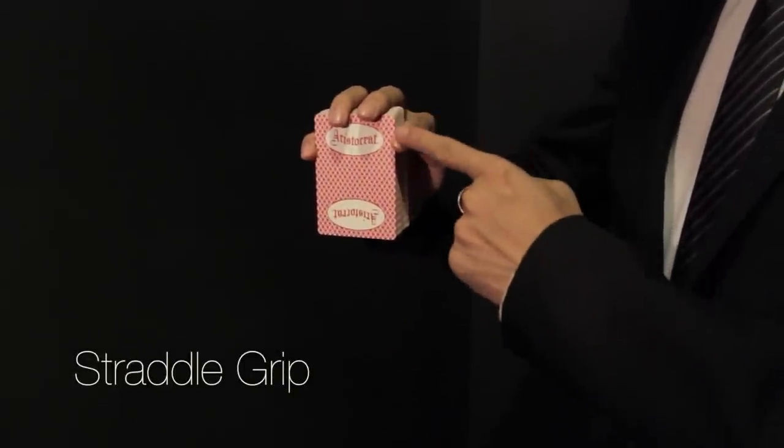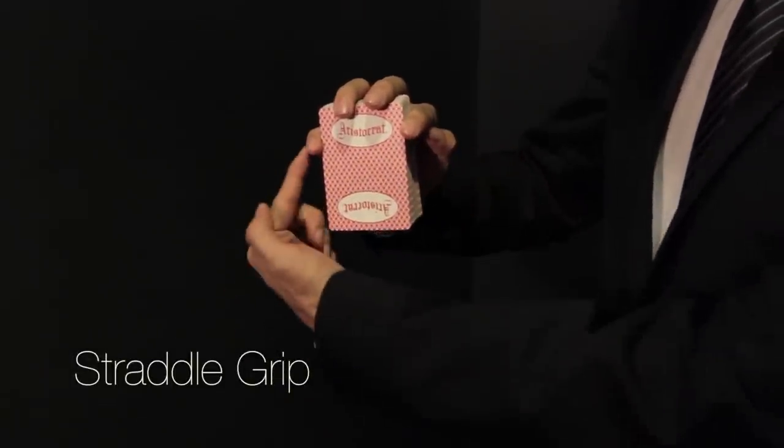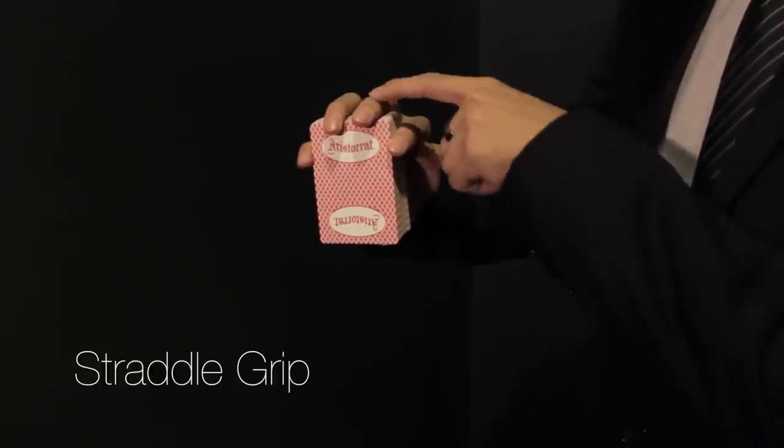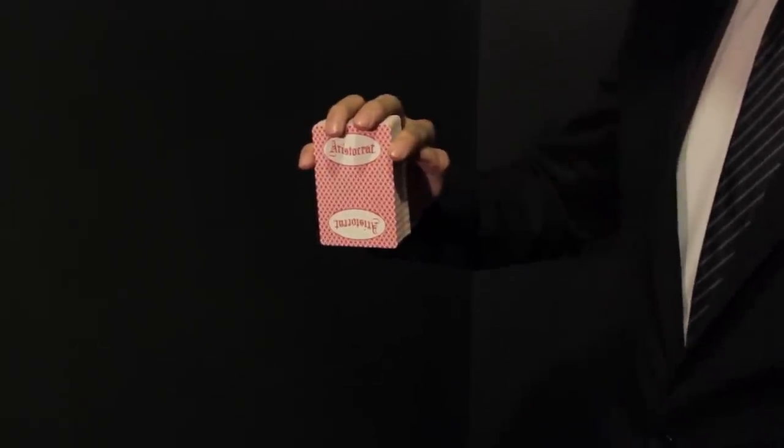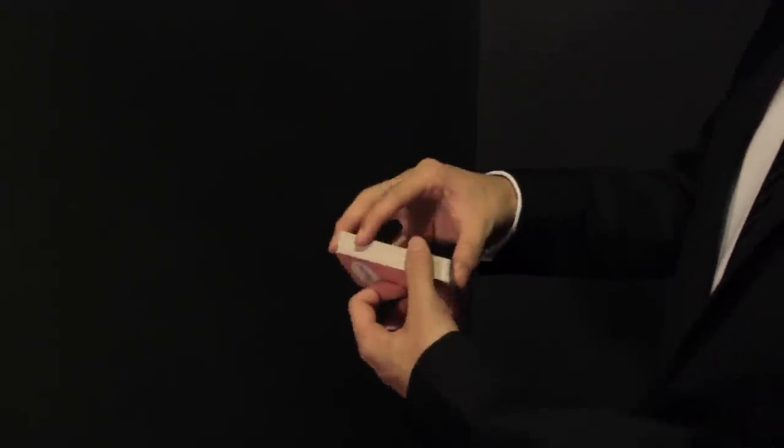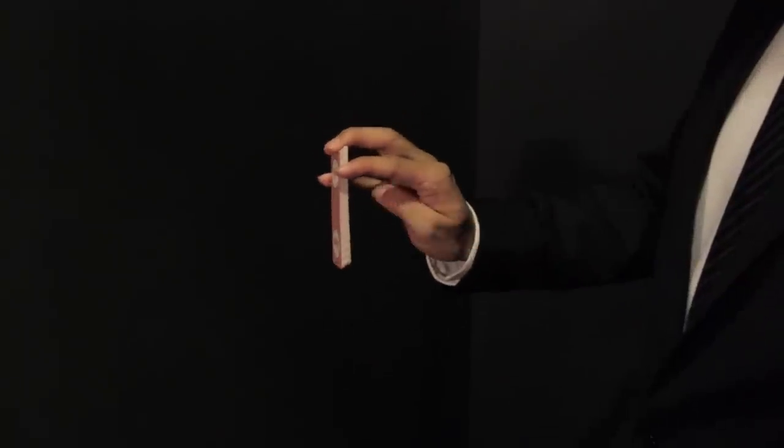Straddle grip. Use the side of your fingers to hold the long edge of the packet with one or two other fingers on the short edges. For maximum maneuverability, grip the packet closer to your fingertips.